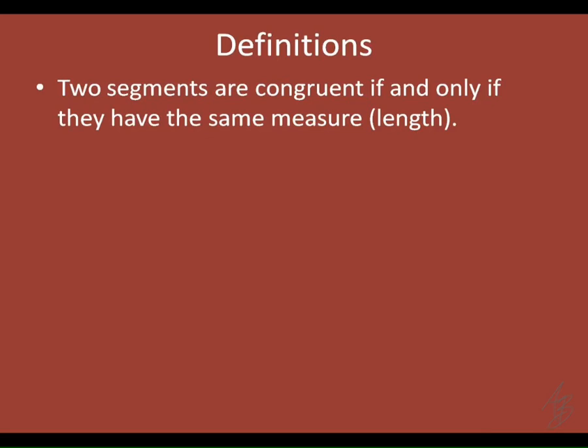Here's a definition you need to write down — it goes on the back of your note sheet. Two segments are congruent if and only if they have the same measure or length, because we measure a segment by how long it is. This uses the same 'if and only if' biconditional structure we saw with supplementary angles yesterday. So if I tell you two segments are congruent, you can conclude they're the same length; or if I tell you they have the same measure, you can conclude they're congruent.